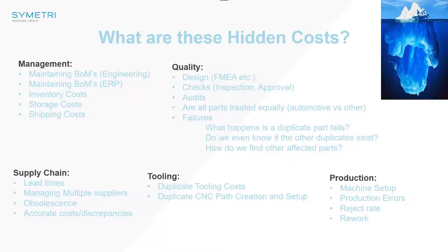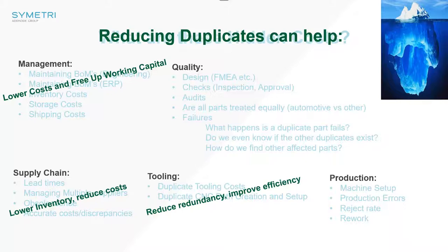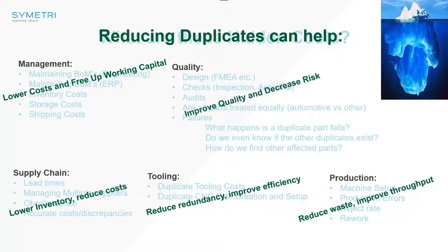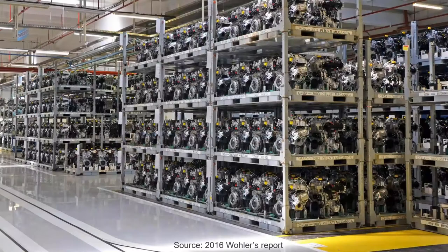If we think about using a tool like Duplicate Search, we can start addressing some of these hidden costs. Reducing duplicates in our designs can really help. From a management point of view, we lower costs and free up working capital. From a supply chain point of view, we lower inventory and reduce costs. From a tooling point of view, we reduce redundancy and improve efficiency. From a production point of view, we reduce waste and improve throughput. From a quality point of view, we improve quality and decrease risk. If we can lower costs and decrease risk, we're going to make business owners everywhere happy. In 2016, a report by Wohler said that 70% of spare parts that sit in warehouses today never get used — a lot of them end up in landfill.